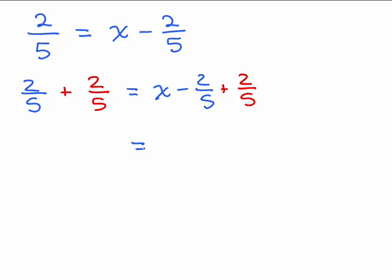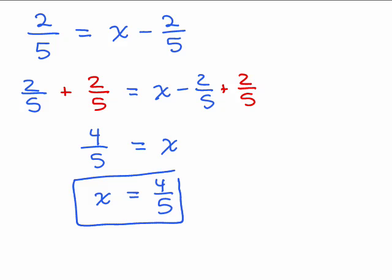All right, so on the left-hand side, remember how to add fractions? You have to have a common denominator. Hey, cool, we already have that, and then we add the numerators, 2 plus 2 is 4. So I have x equals 4 fifths, but remember, we don't want to write it like that. You want to write it as x equals 4 fifths.